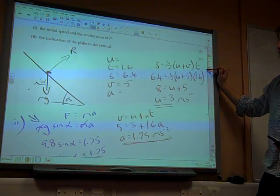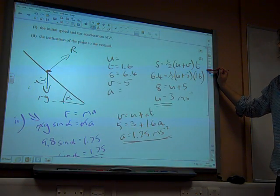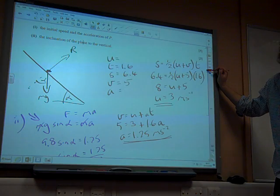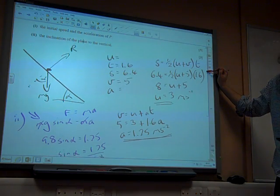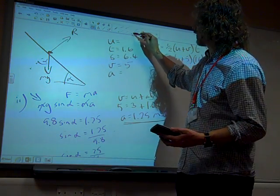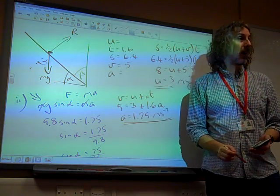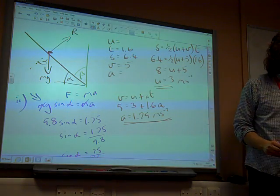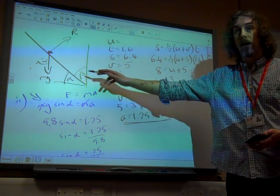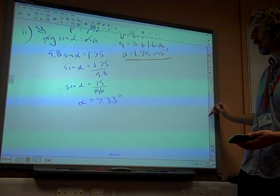And we're checking what the question wanted. Find the inclination of the plane to the vertical. I didn't perhaps read that all that well. But the inclination of the plane to the vertical is actually that angle there. That's the angle that I want. I've found the value of alpha. I want the value of beta.